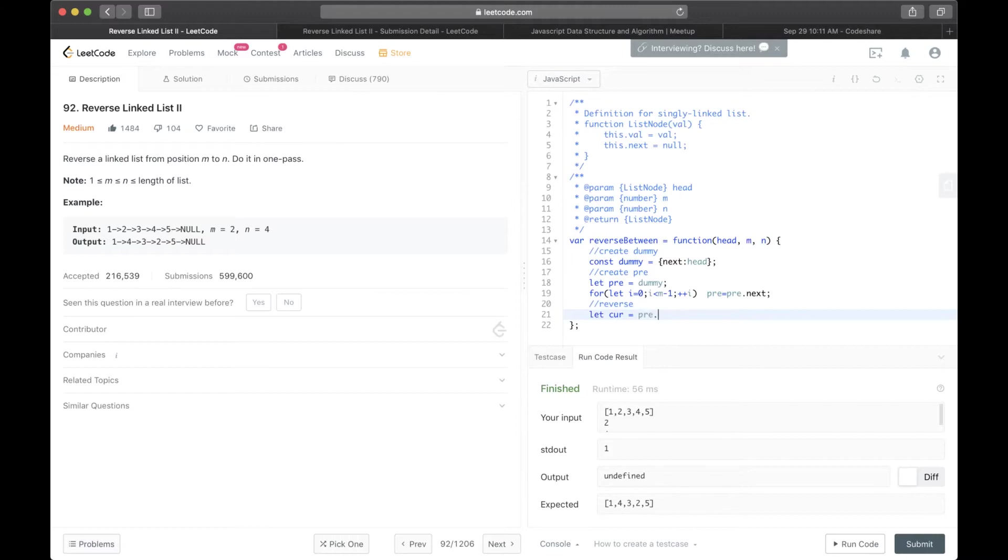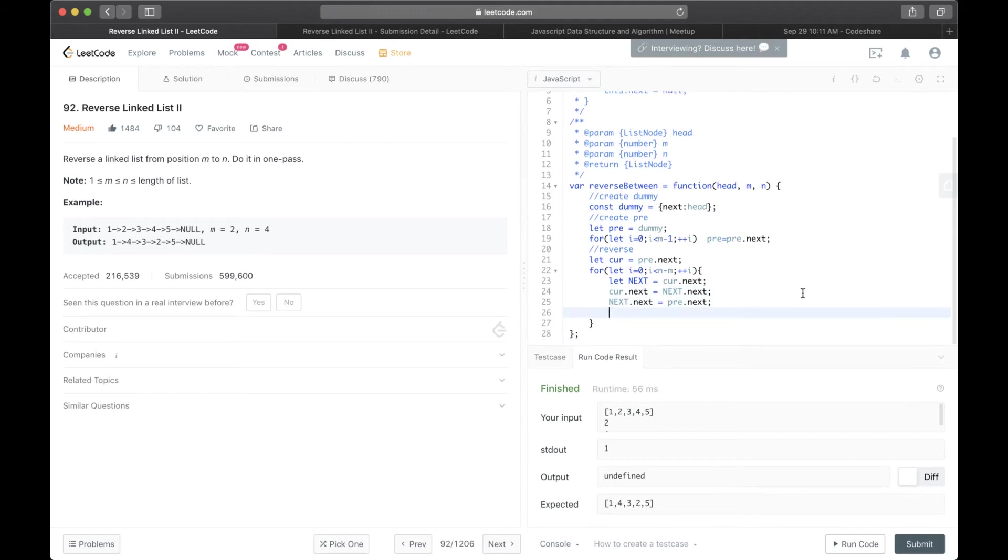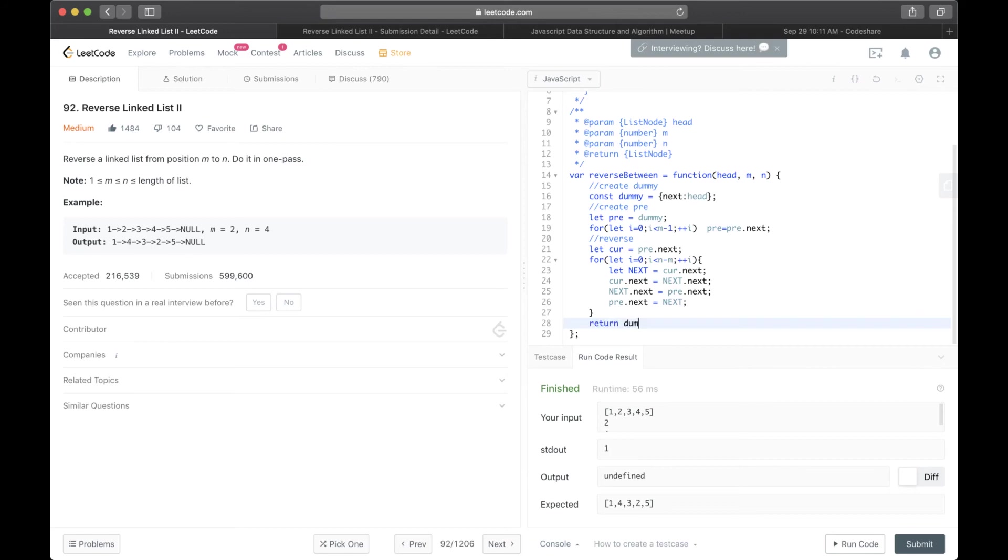So then we start reversing. But before that, the current will be pre.next. So how many times we reverse is n minus m times. Now next is cur.next. Cur.next is next.next. Next.next is pre.next. Pre.next is next. By the way, these four lines of code are exactly the same as what I wrote earlier in the whiteboard. Then in the end, we return dummy.next.